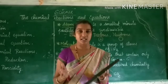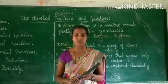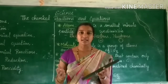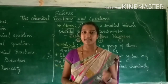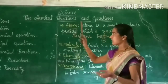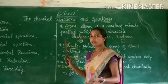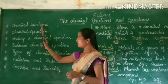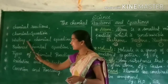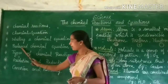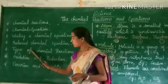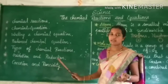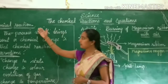Such a reaction is called a chemical reaction, and the same reaction written in a symbolic form is called a chemical equation. In this chapter, we shall discuss: chemical reaction, writing a chemical reaction, balanced chemical equation, types of chemical reactions, oxidation and reduction, and corrosion and rancidity.